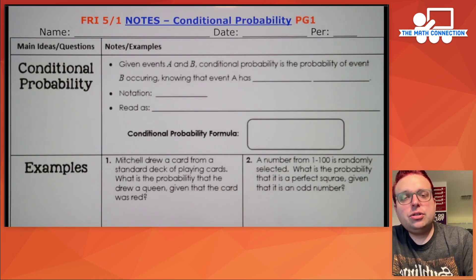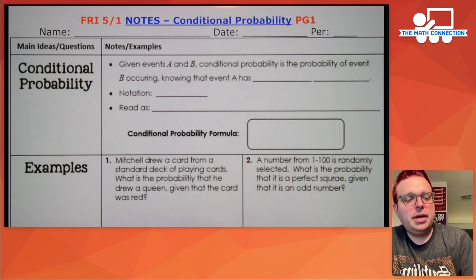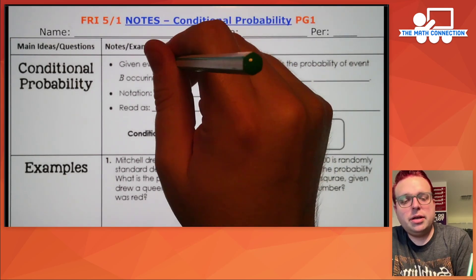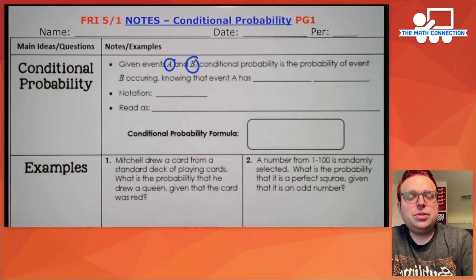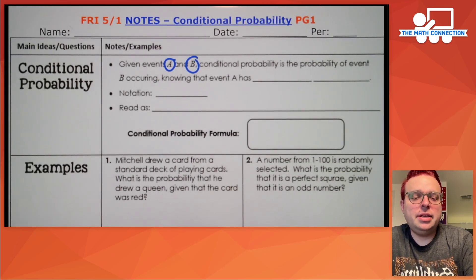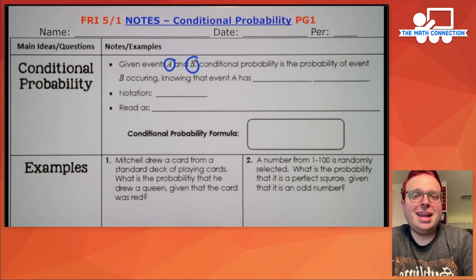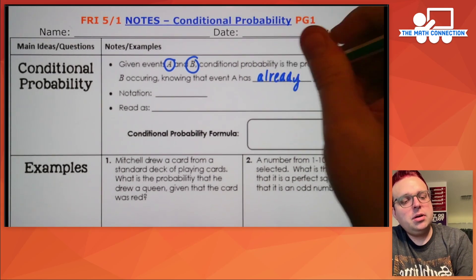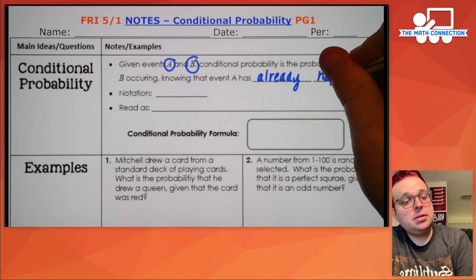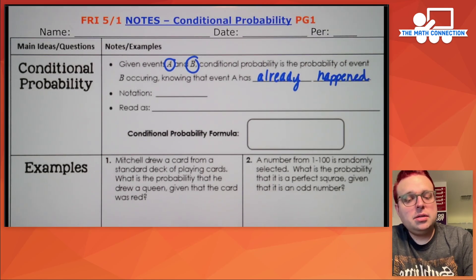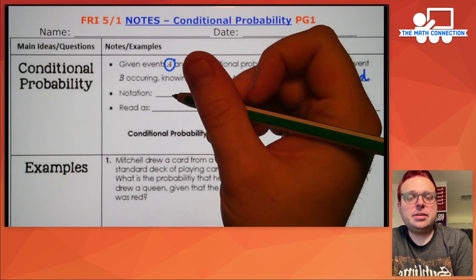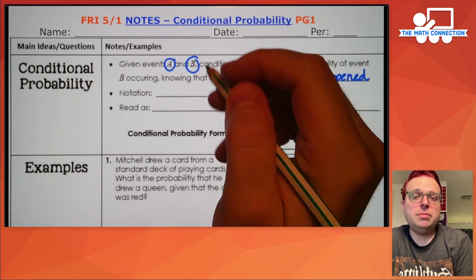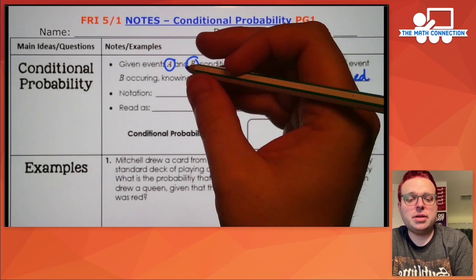Conditional probability means you have two different events that could happen — we're going to call them A and B. The conditional probability is the probability that B will happen given that A has already happened. The notation we're going to use to represent this is going to be really important when you're reading the problems in these notes and also on future assignments.